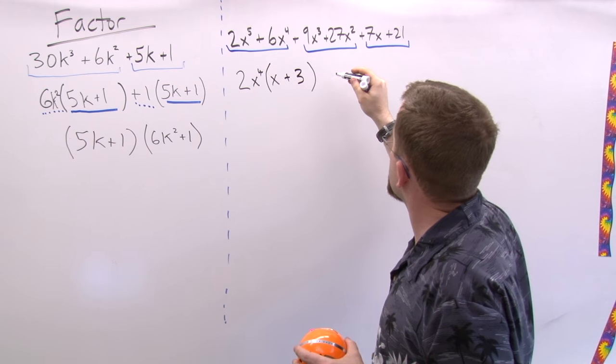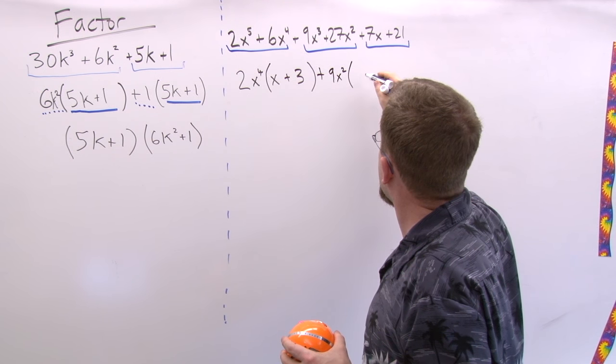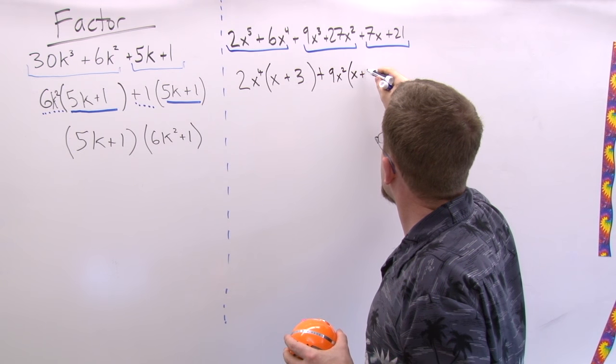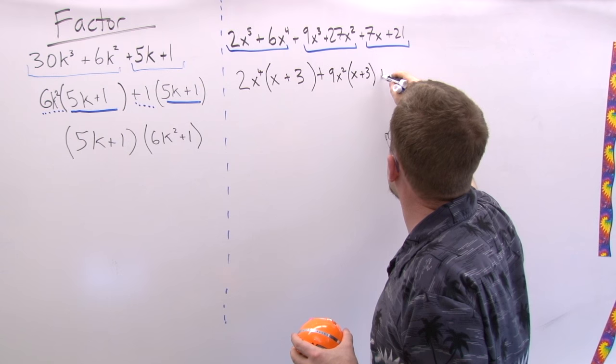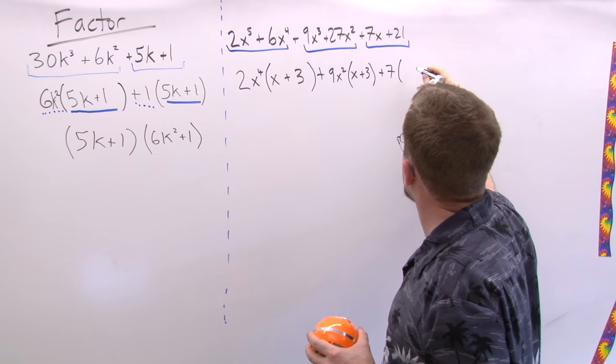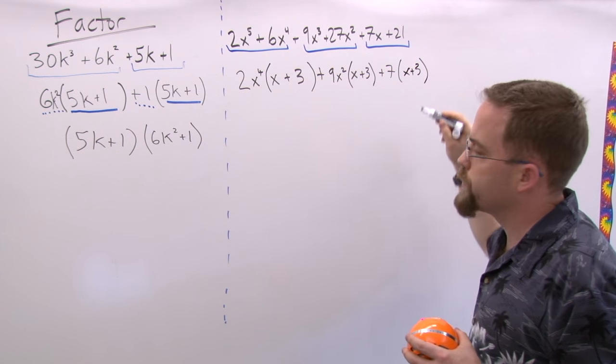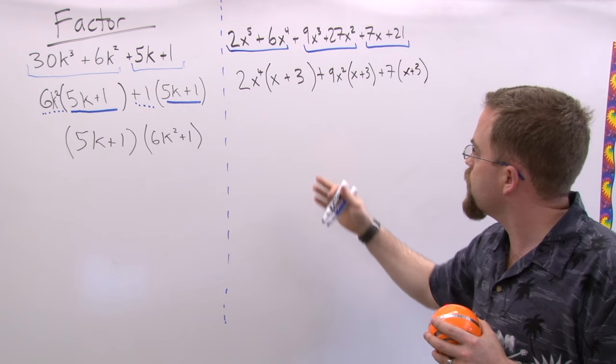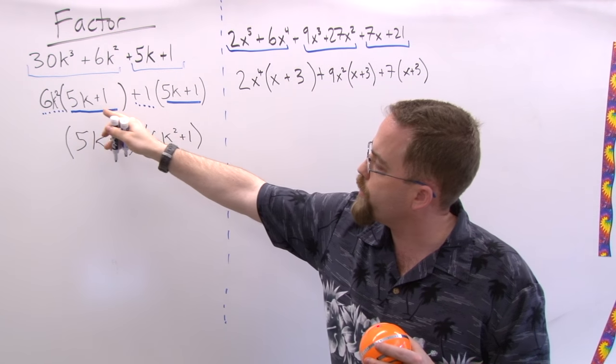What about in these guys? Well I can take out a 9X squared and I'm left with X plus 3. And in this case I can take out a seven and no X's are in common, so that'll go down to X plus 3.